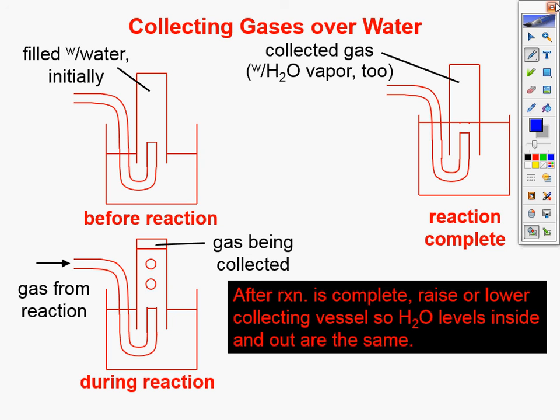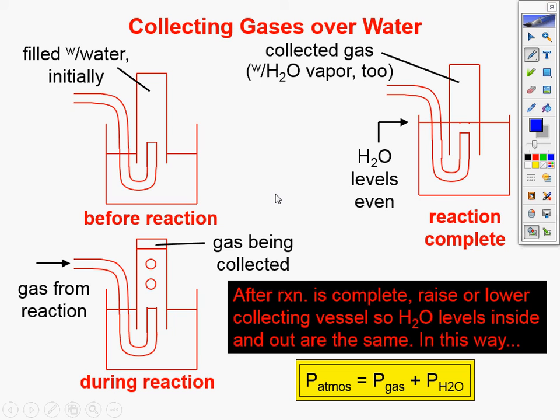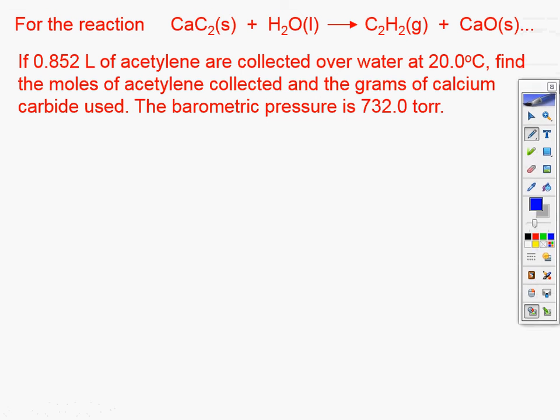After the reaction is complete, we raise or lower the collecting vessel so the water levels inside and outside are the same. The atmospheric pressure must be given to you in the problem. If you need to find the pressure of the gas, you subtract the water vapor pressure from the atmospheric pressure. It's another subtraction problem — a very common AP Chemistry question.